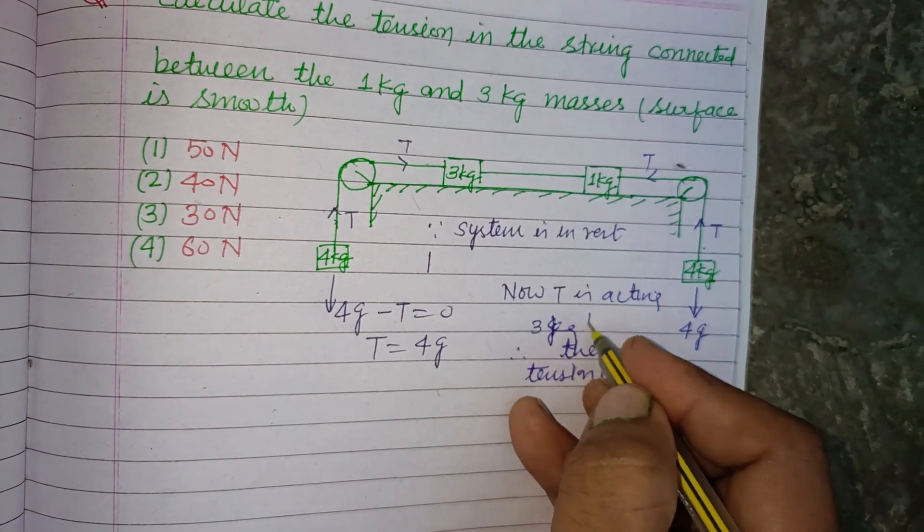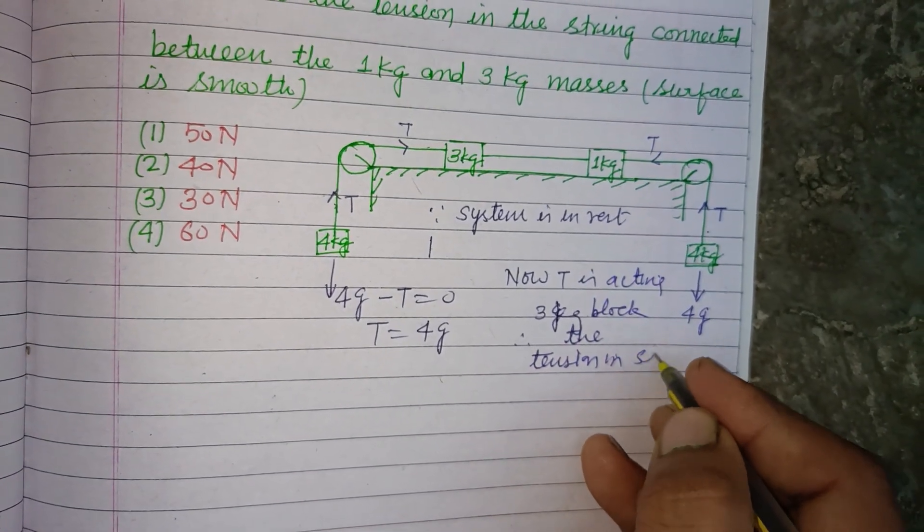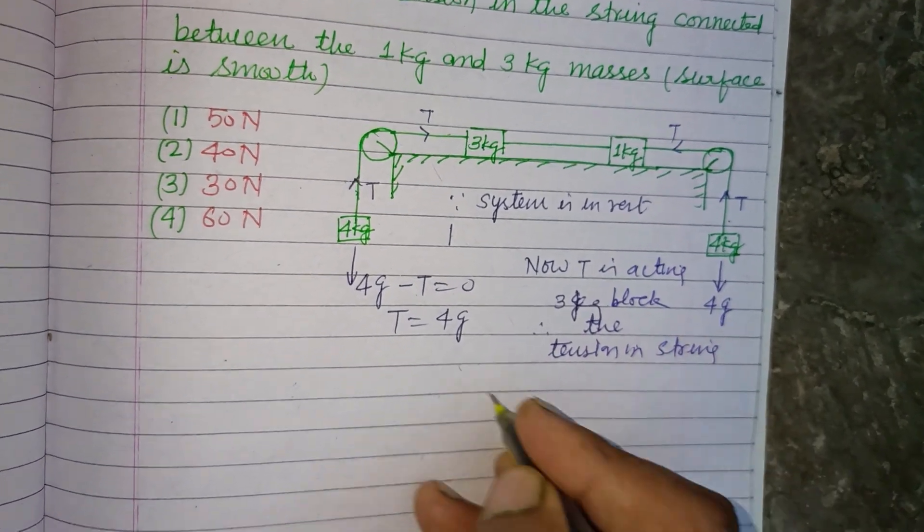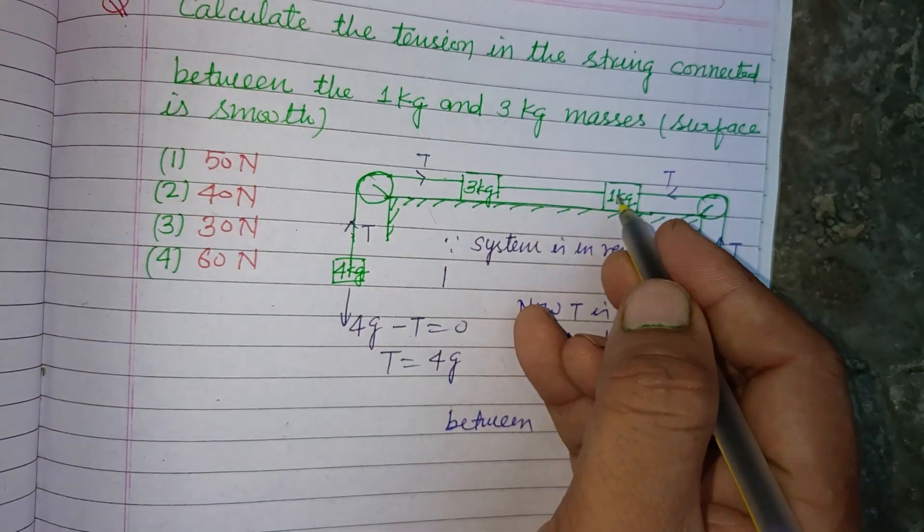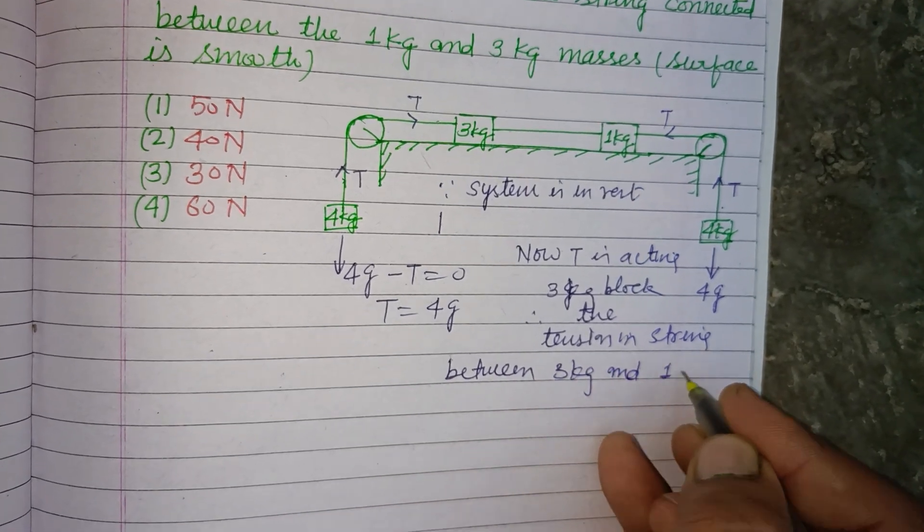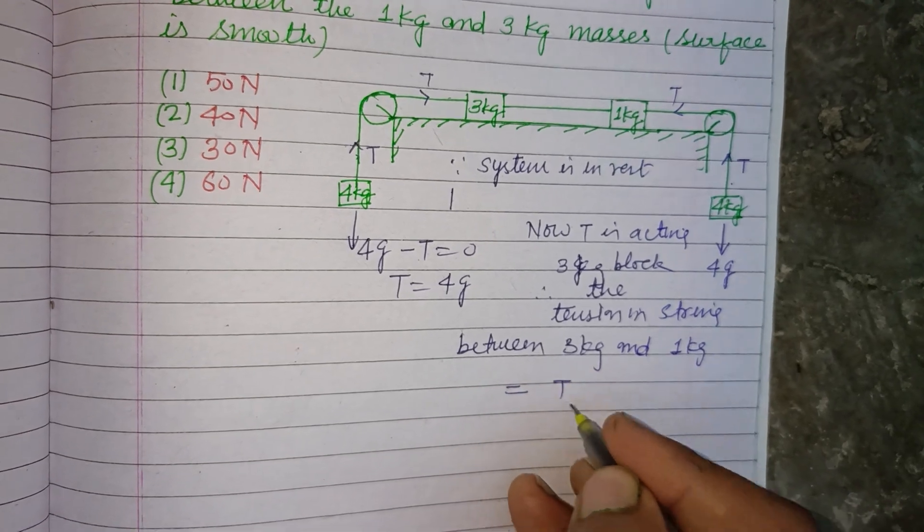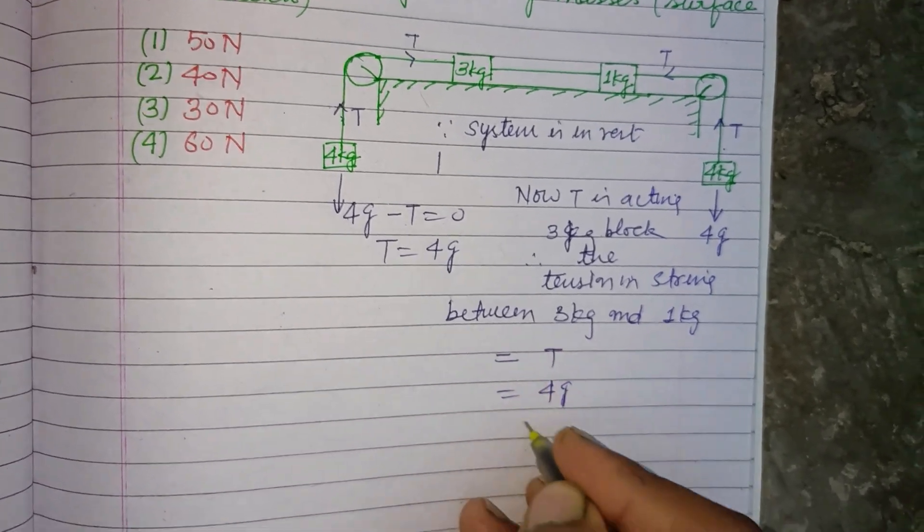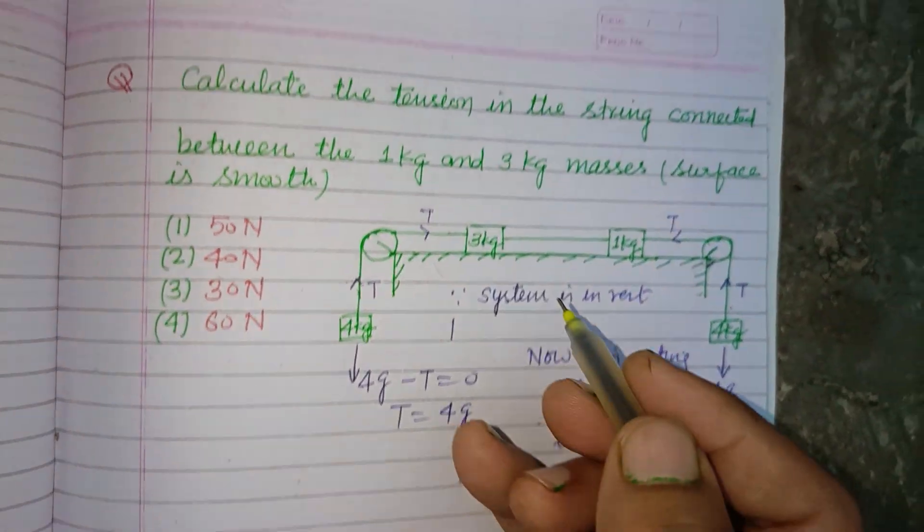The 3 kilogram block - so tension in the string between 3 kg and 1 kg equals T, which is 4g. So 4 into 10, that is 40 newton.